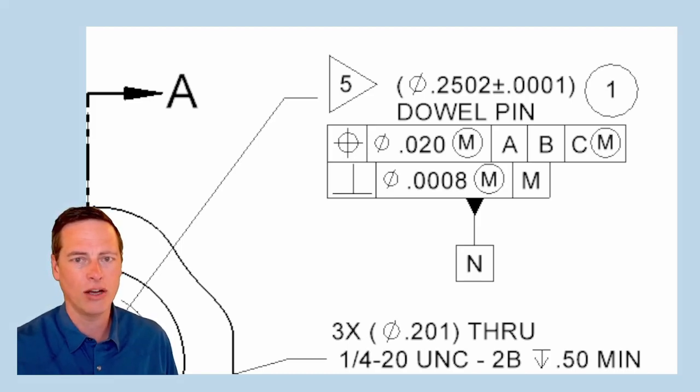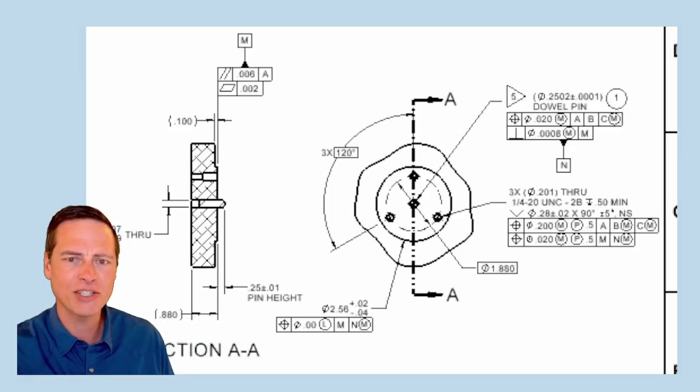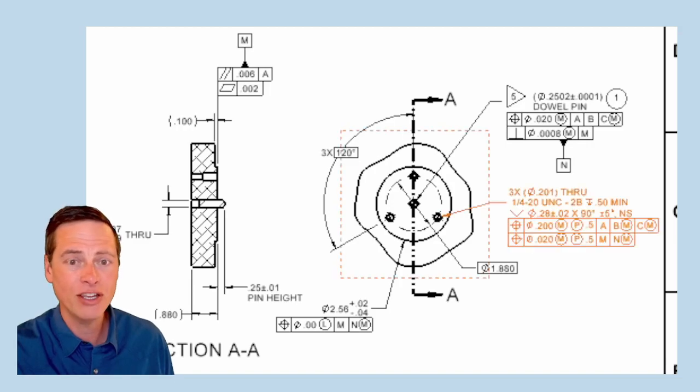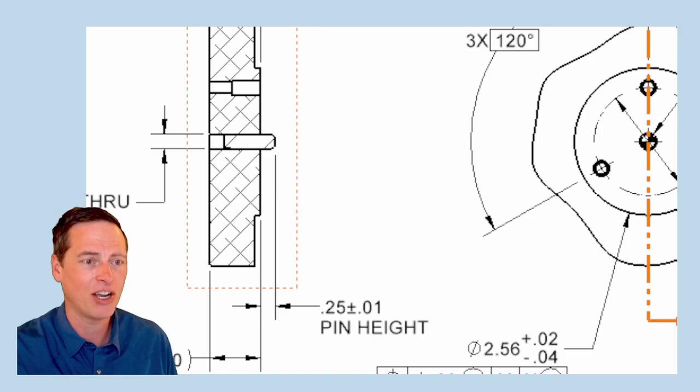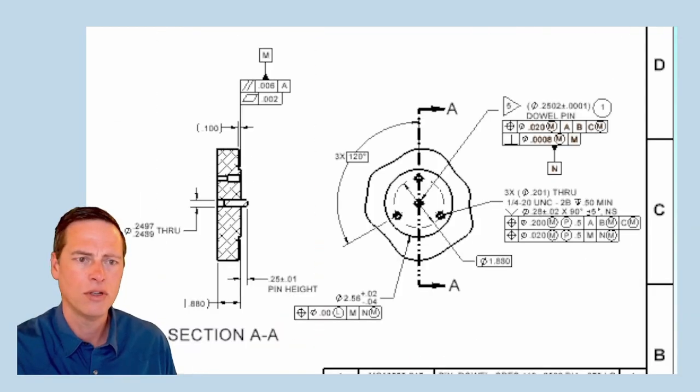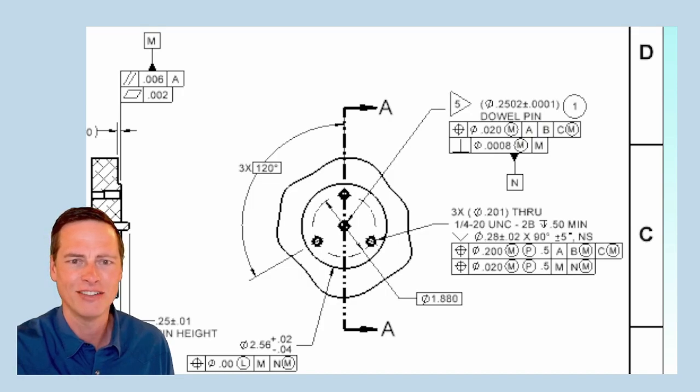The one bit of good news here is that you might still be able to call out a very tight perpendicularity tolerance under the right conditions. Those conditions? Well, one is that this datum M feature and the press fit hole for the pin can be produced in the same machining setup. Two is that the pin has lots of engagement. And three is that the pin has not very much protrusion, especially when you take away this radius. So what does it mean, this eight tenths perpendicularity?